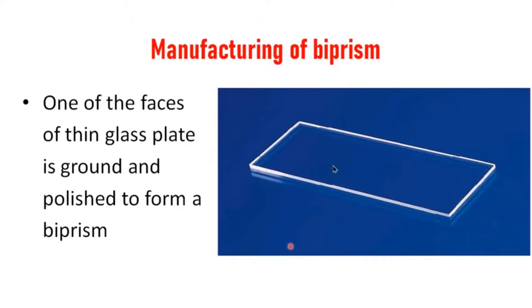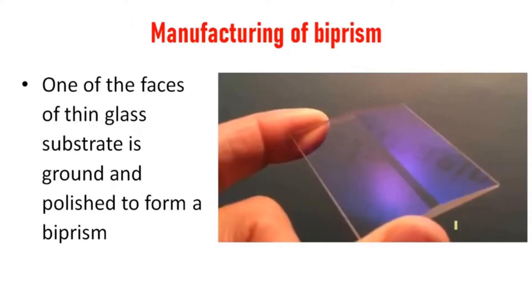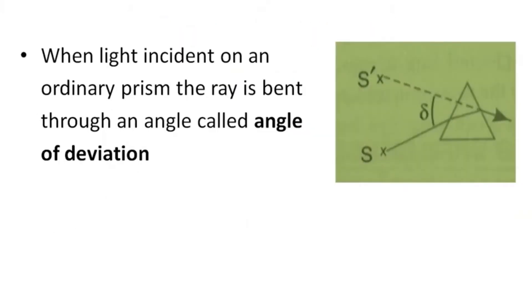Regarding the manufacturing of a biprism: a glass plate is polished from both sides, keeping its center point, so both sides are polished sharply to form a biprism. One face of a thin glass substrate is ground and polished to form the biprism. It has a very small side angle and an obtuse angle.